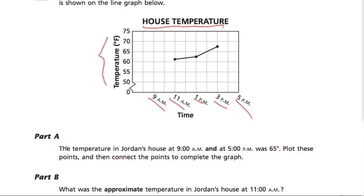Part A: The temperature in Jordan's house at 9 a.m. and at 5 p.m. was 65 degrees. Plot these points and then connect the points to complete the graph. So here's 9 a.m., and this whole line up here represents the temperature at 9 a.m. We just need to pick the point that the temperature actually was.